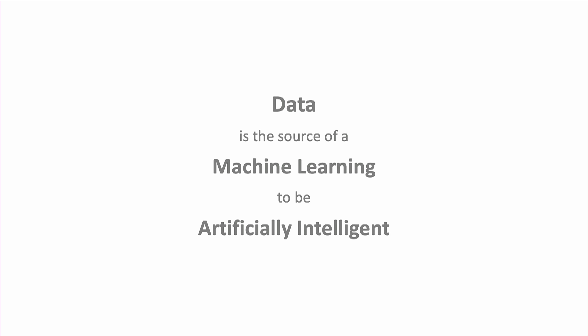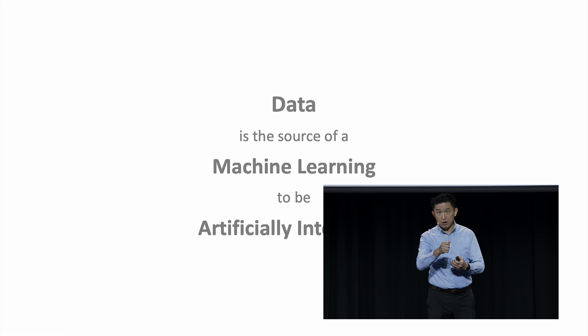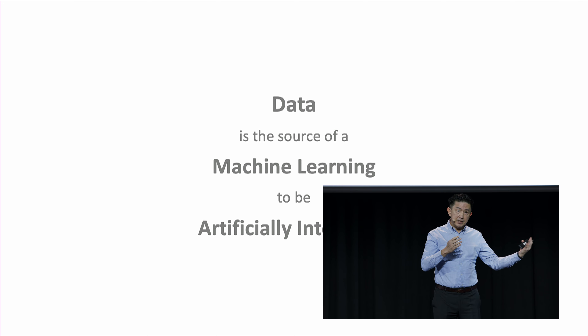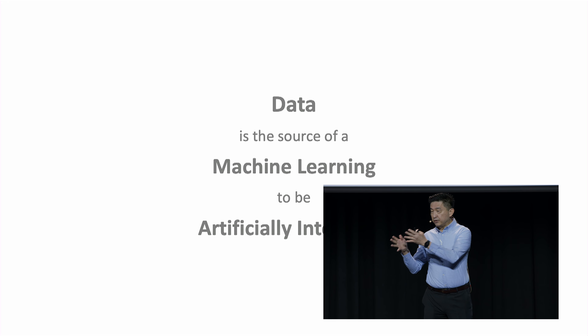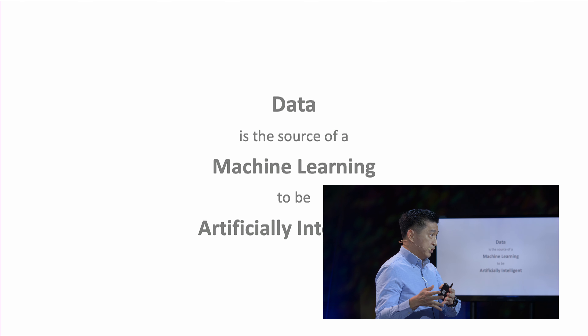By machine here I mean a software program that is defining a bunch of adjustable dials called weights. And by learning, I mean you feed data in, tweak the dials, and keep doing that until you achieve a prediction of the accuracy you want.